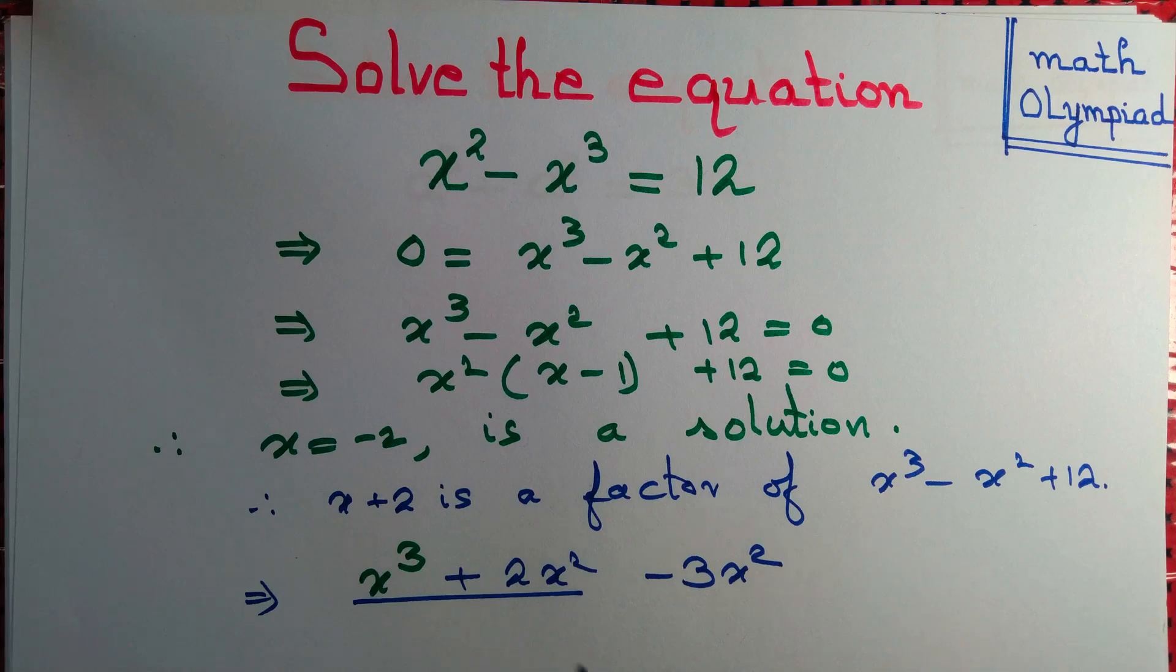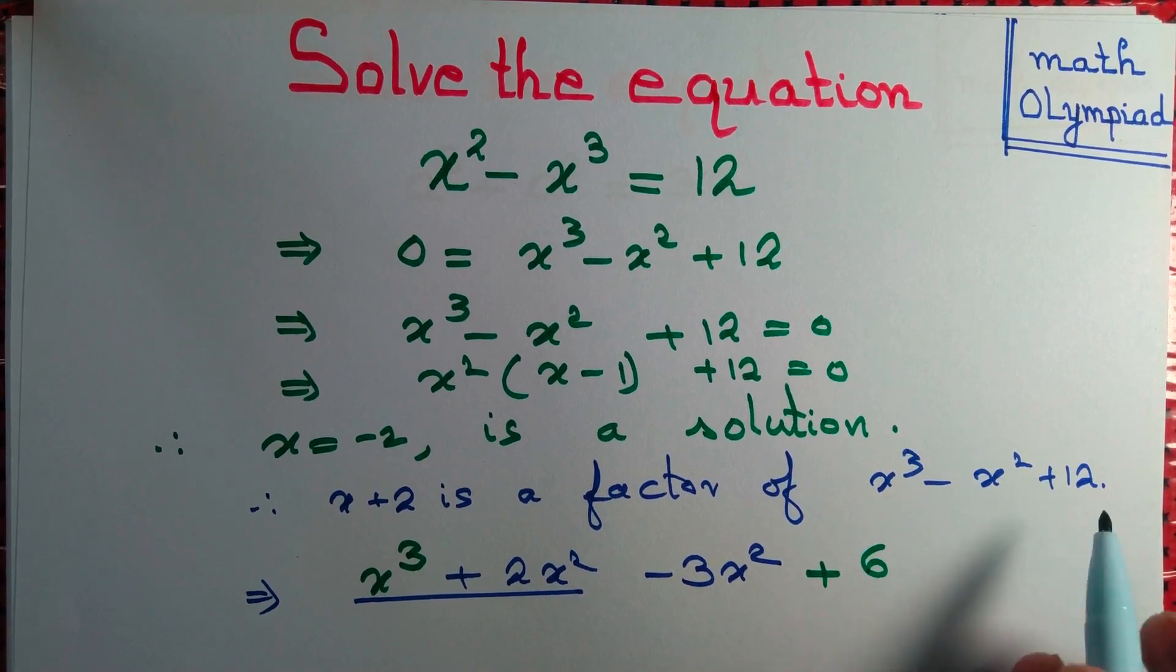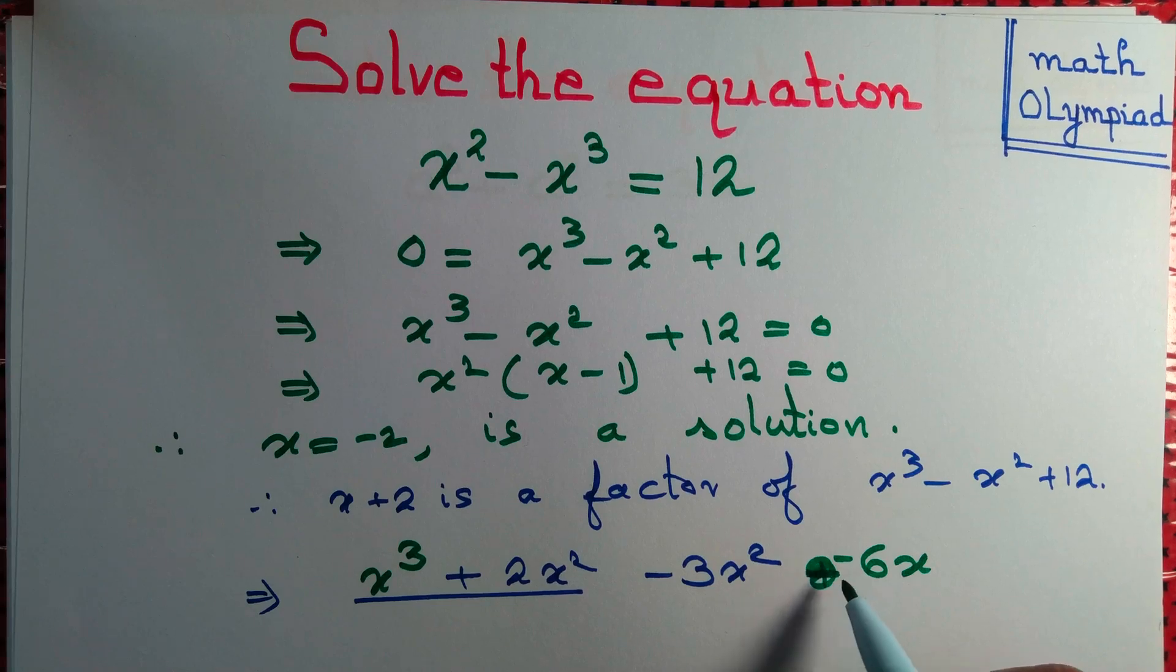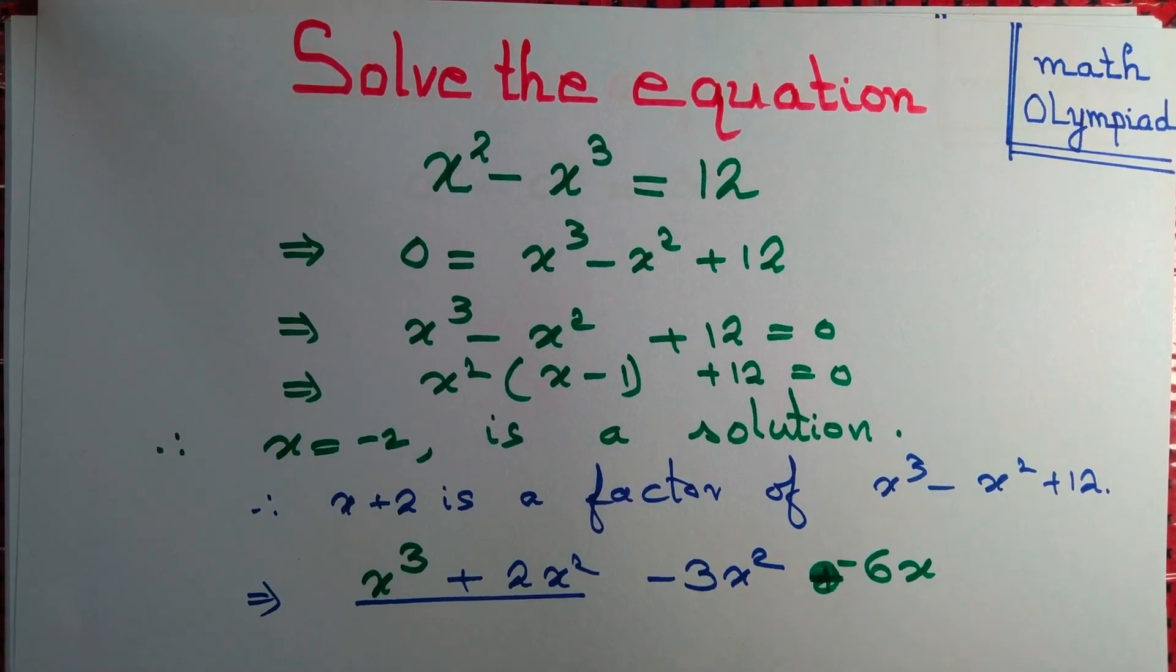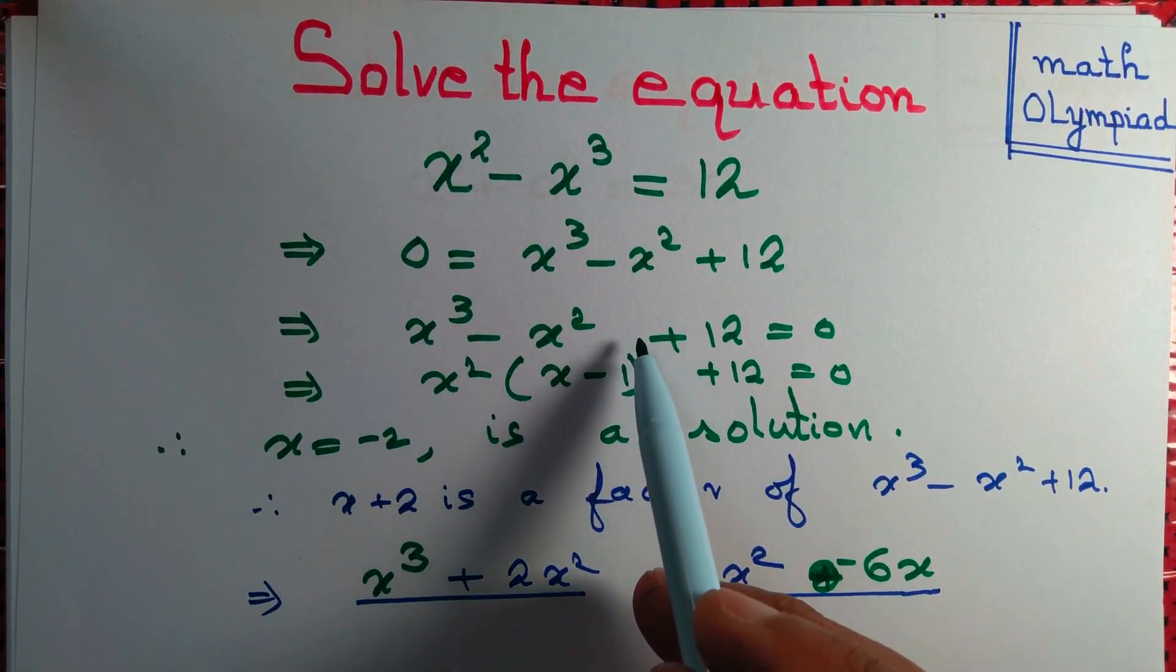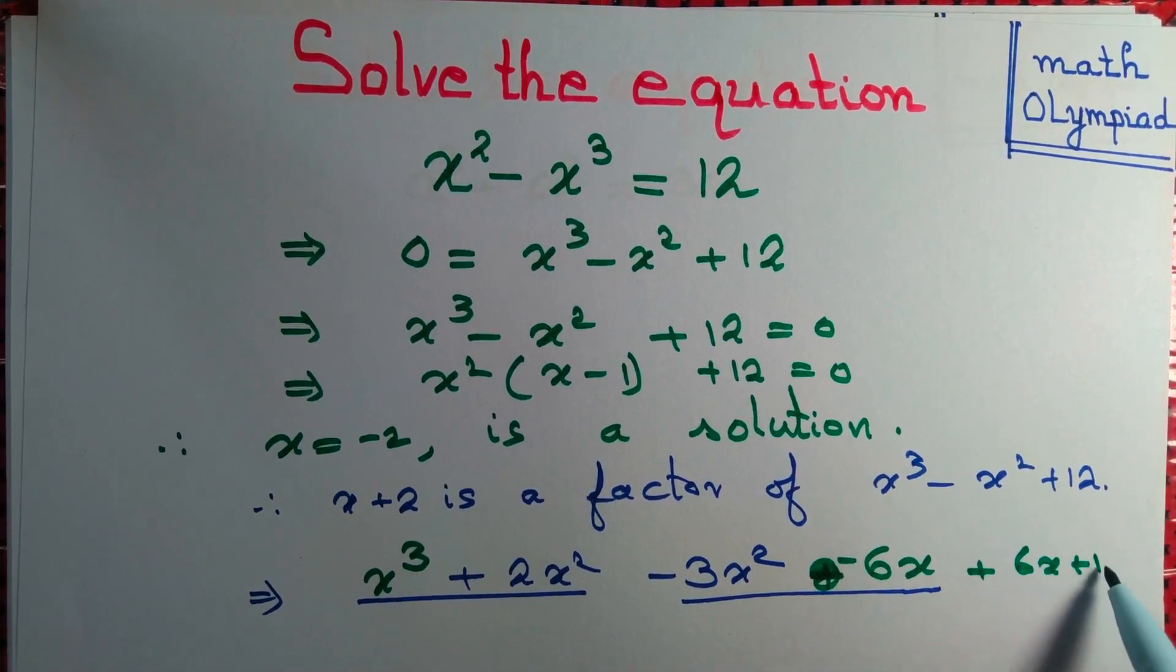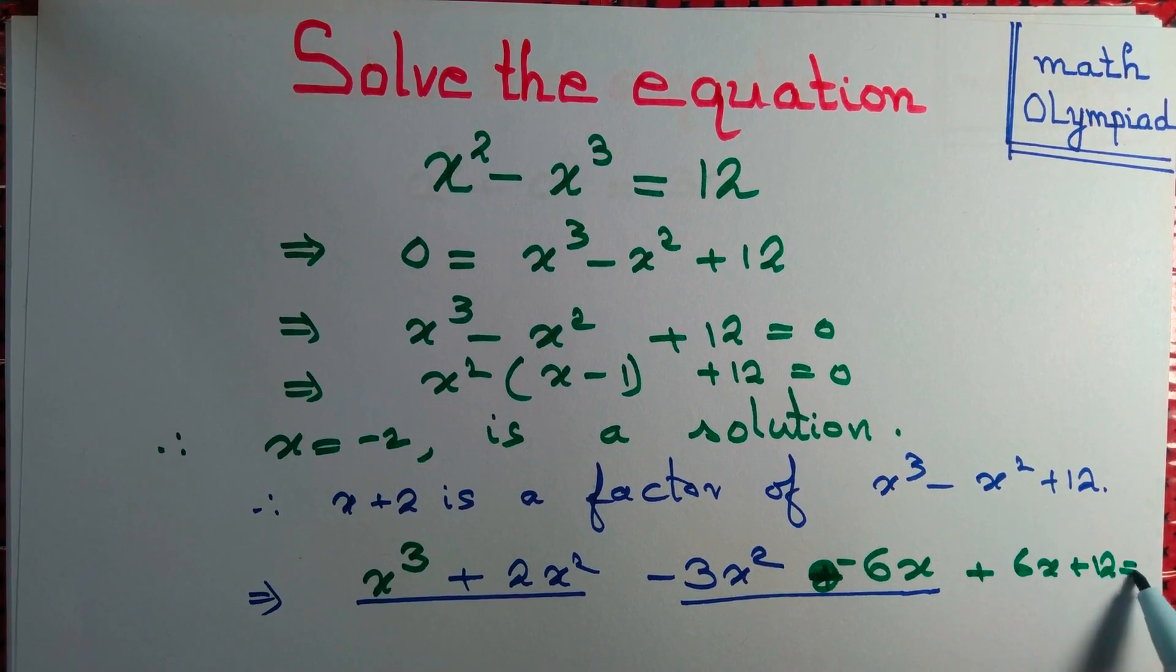Then we want x plus 2 to be a factor, so we add 6x. Now we subtract 6x. Then we'll get x plus 2 is a factor from this quantity as well. Now if we have subtracted 6x, we don't have any term involving x here, so we have to add 6x plus 12 as it is. And that's equal to 0.